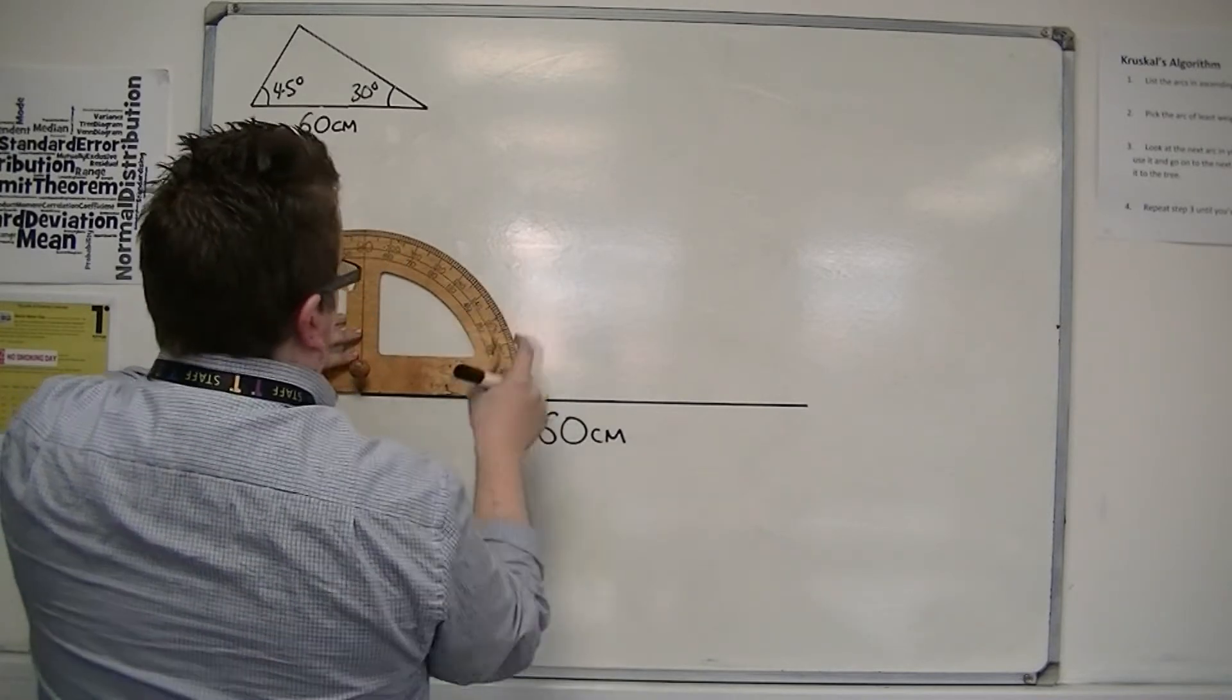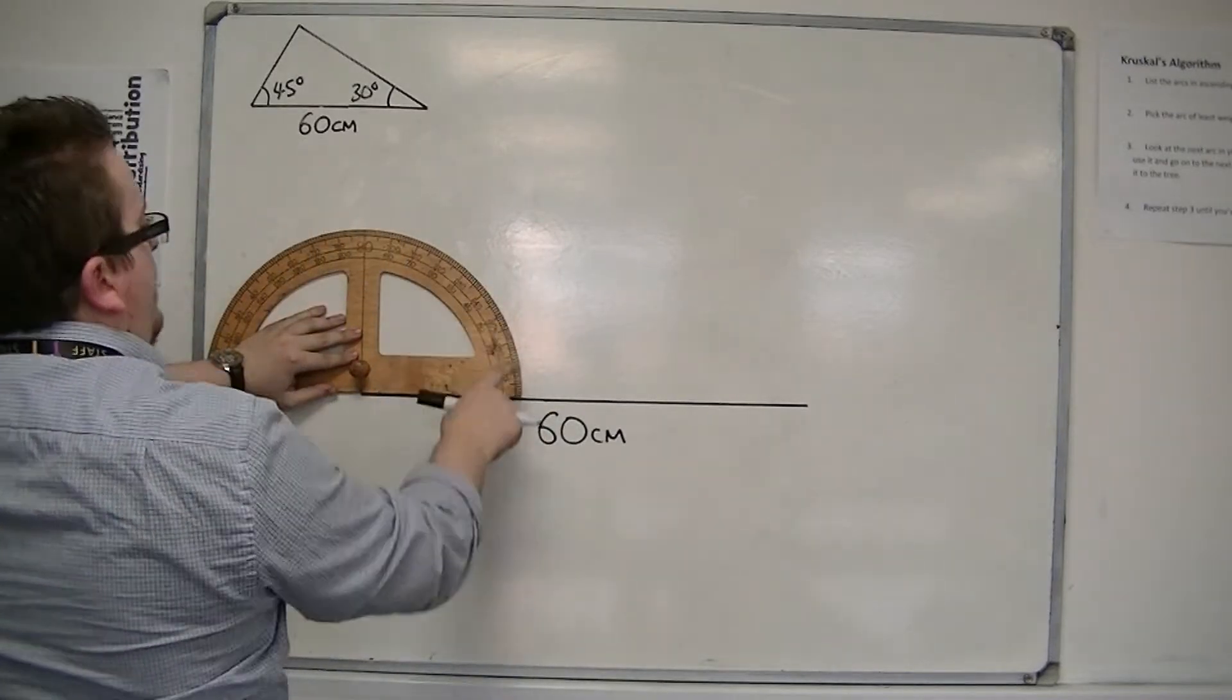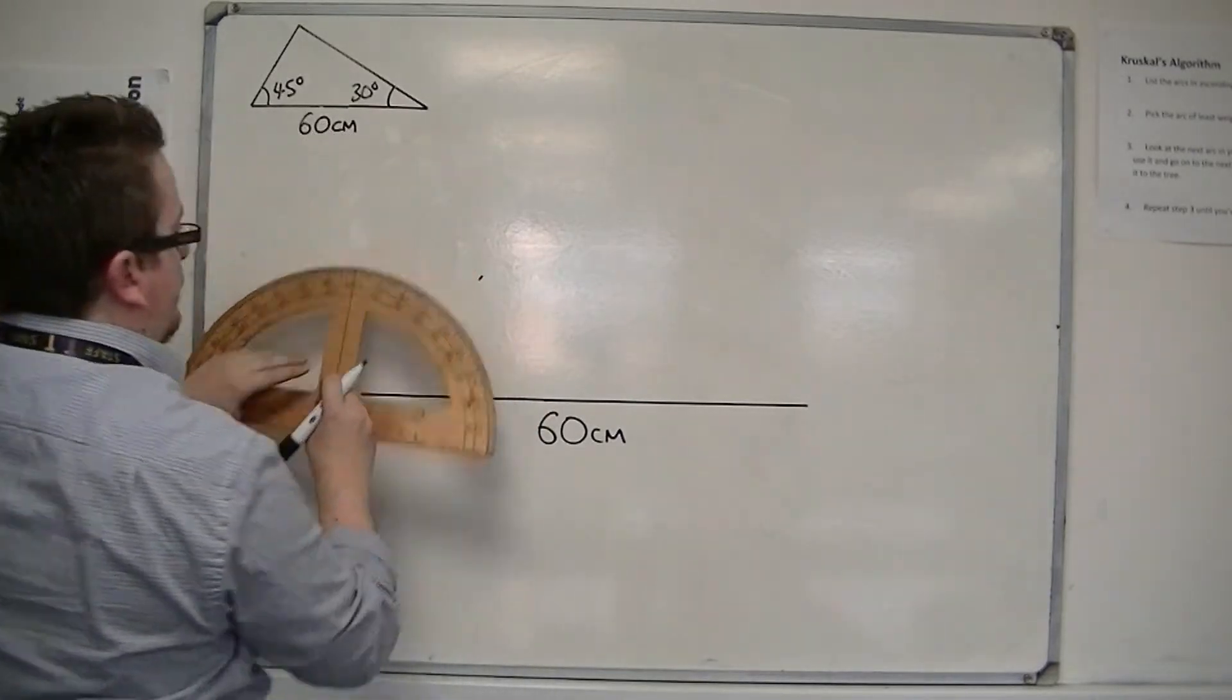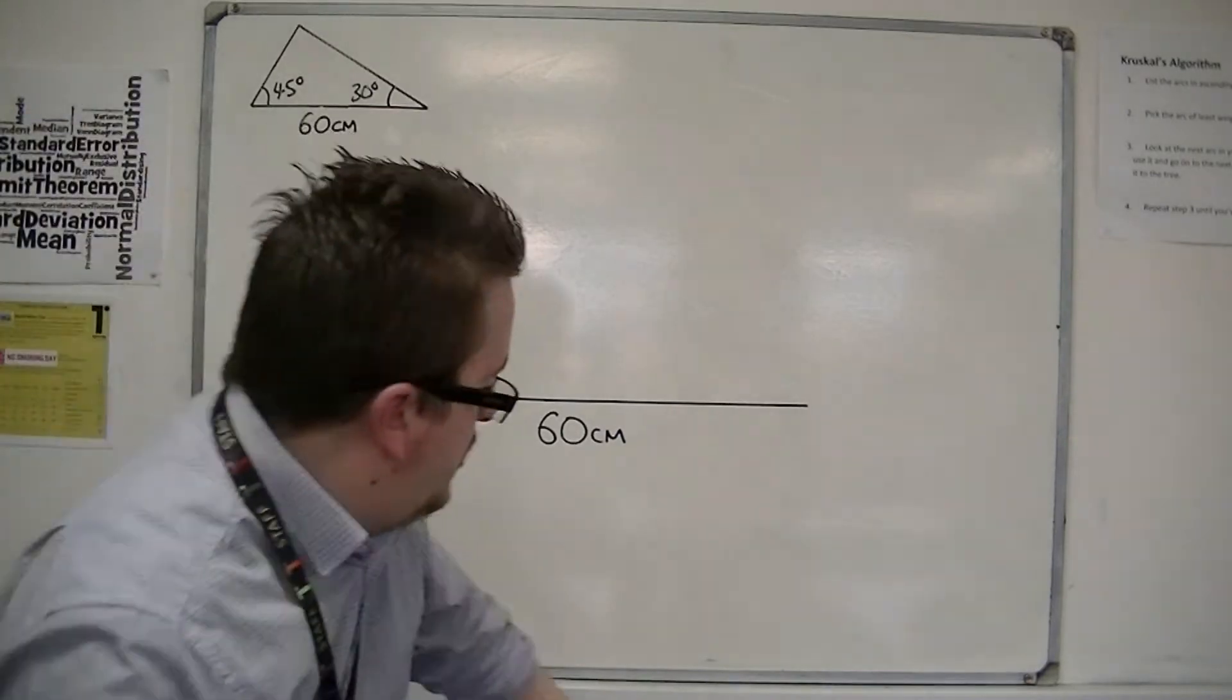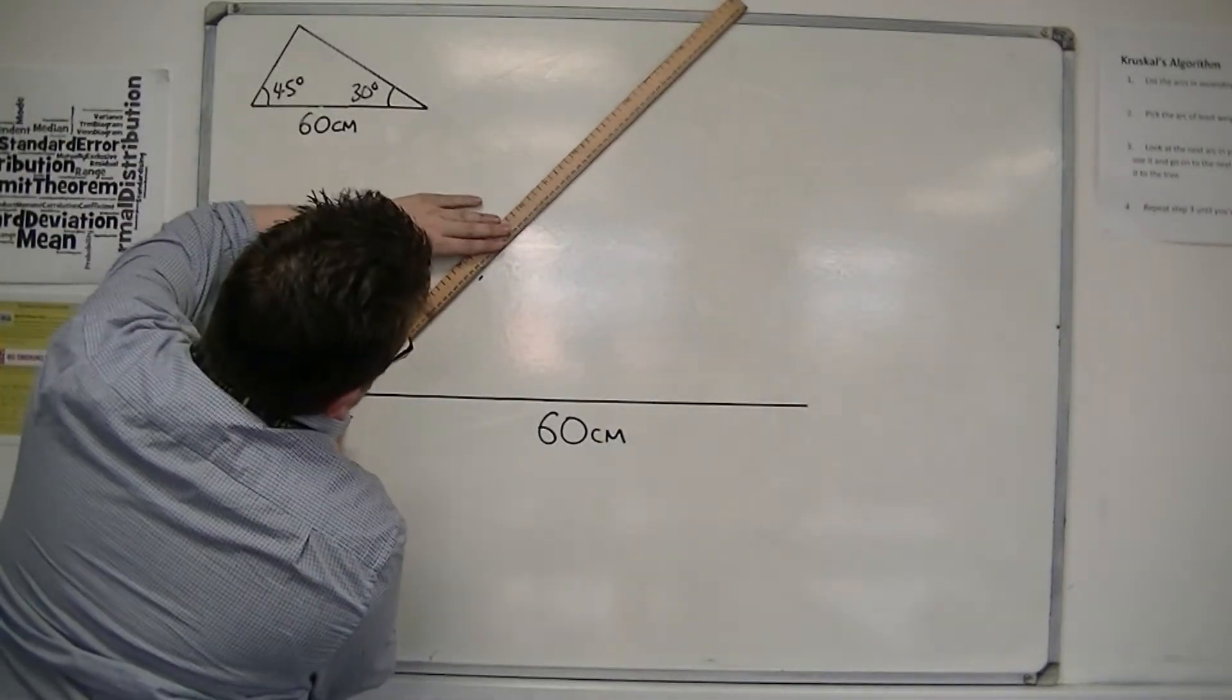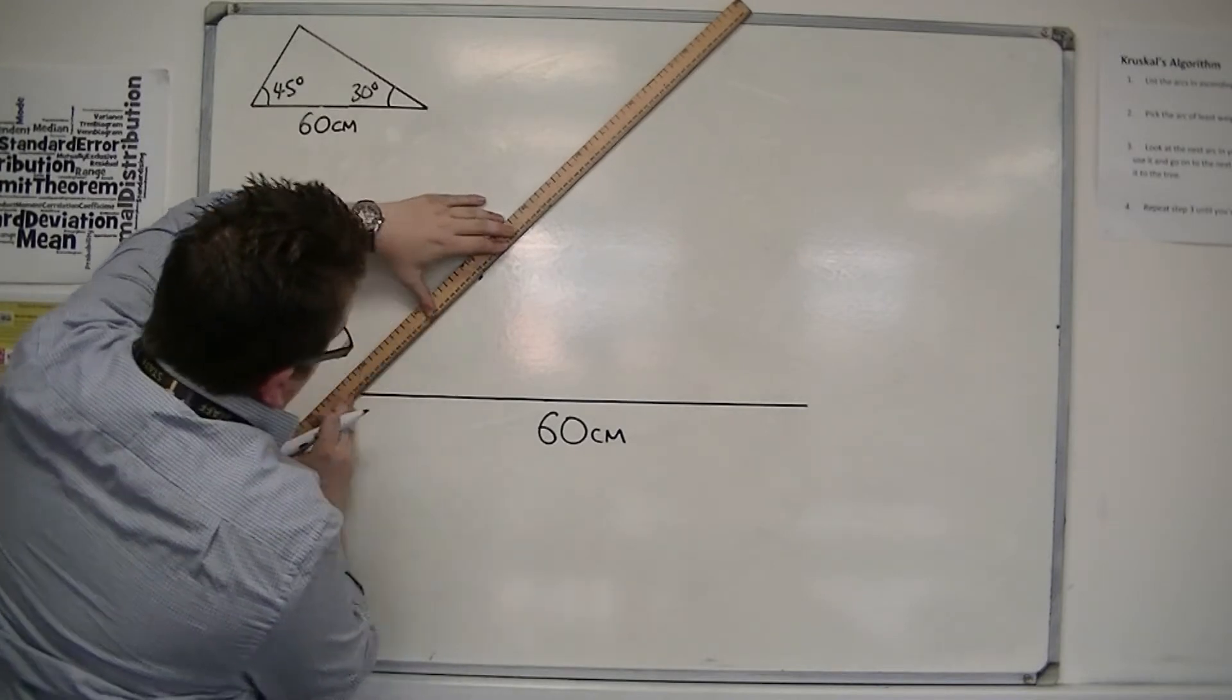Measuring a 45 degree angle from this side. 45 degrees will get me there. I'm going to want to draw a line going from the corner through that point.